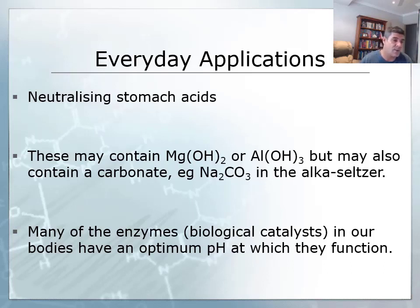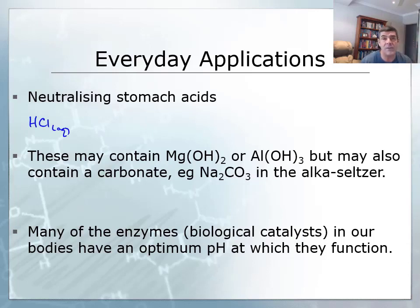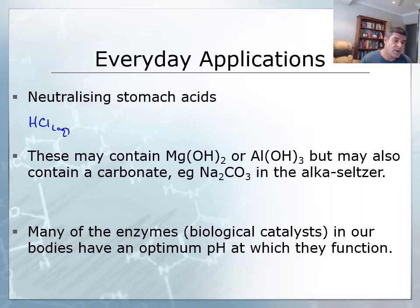One of the most common examples is the neutralization of stomach acids. In our stomachs we produce hydrochloric acid at quite a high concentration, which is very important for protein digestion. pH is a very important component of many body systems — different biochemical reactions have optimum performance at different pH values, not all at a neutral pH of seven. Protein digestion enzymes in the stomach require a strongly acidic environment, so we secrete concentrated hydrochloric acid to achieve this.